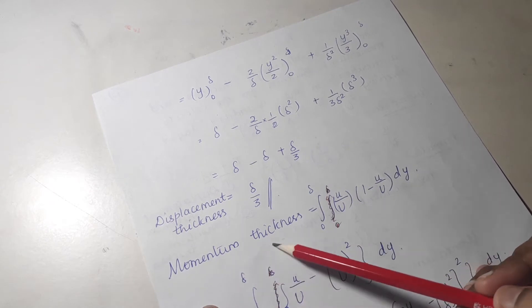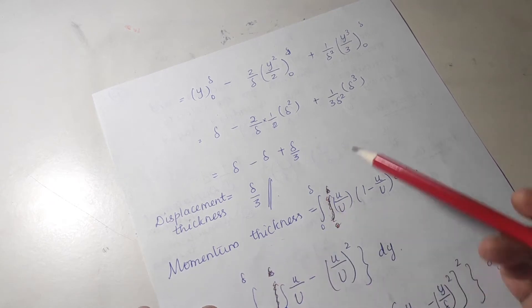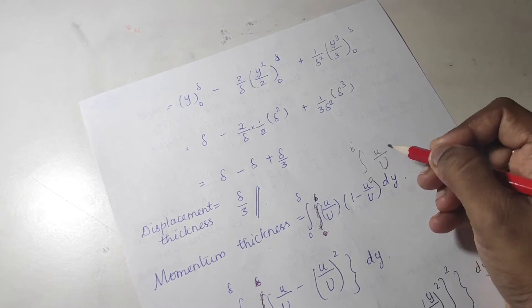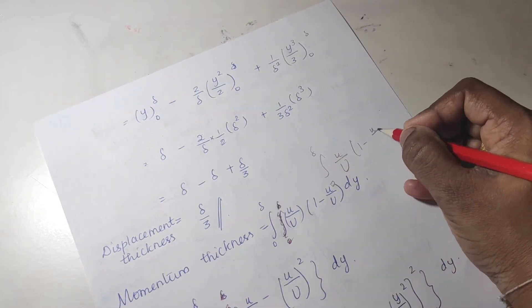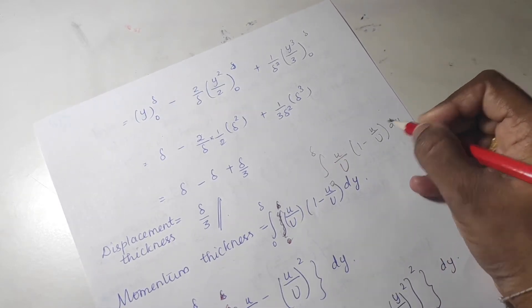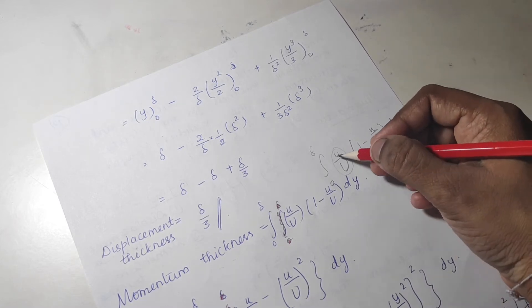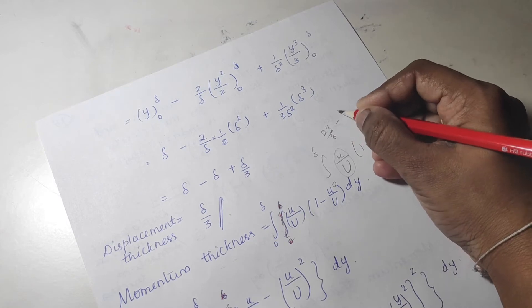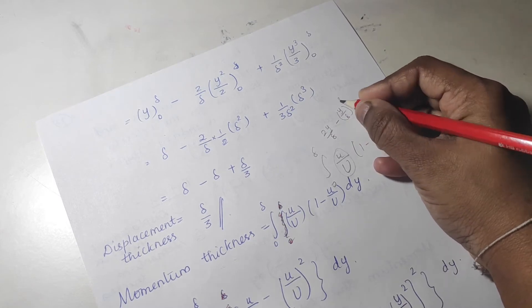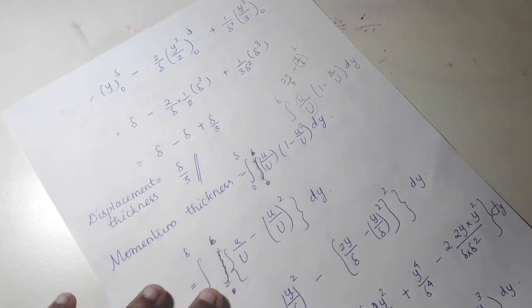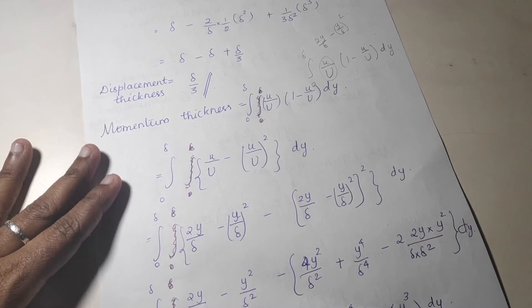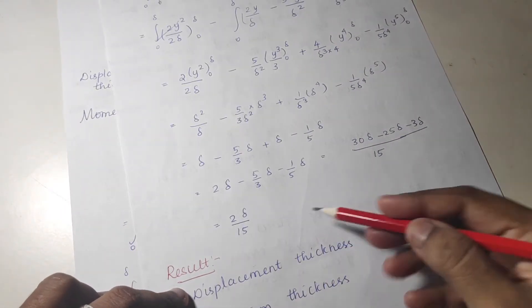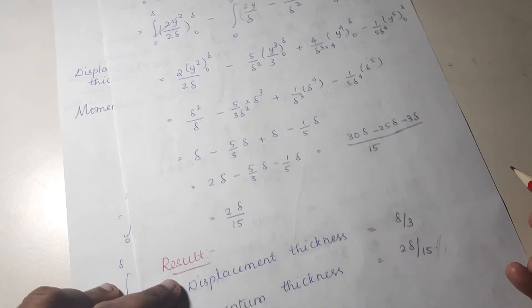For momentum thickness, the integral is 0 to delta of small u by capital U into 1 minus small u by capital U into dy. Substitute 2y by delta minus y by delta the whole square for u/U. Simplification is very important — after simplifying you will get the answer 2 delta by 15.